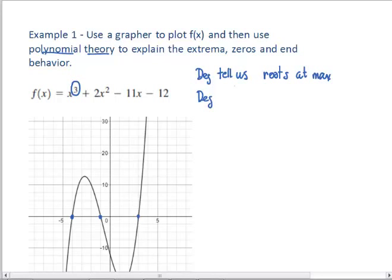The other thing it tells us is if the degree is the degree or the degree minus one, that value tells us the number of turns the function can take at max.